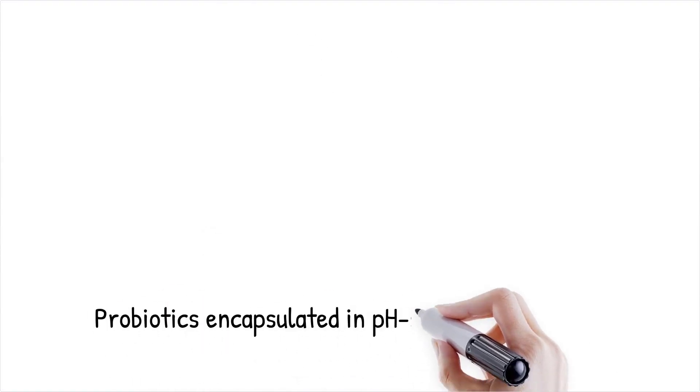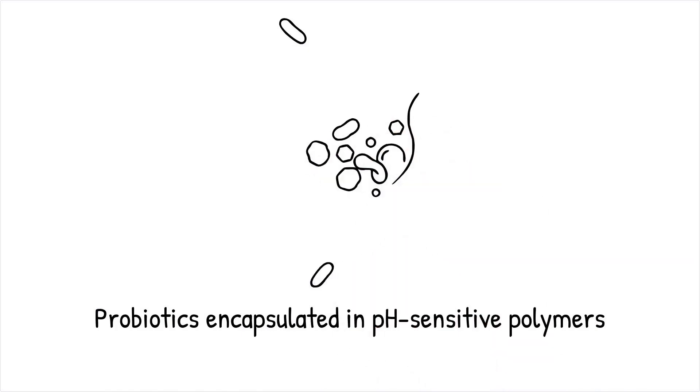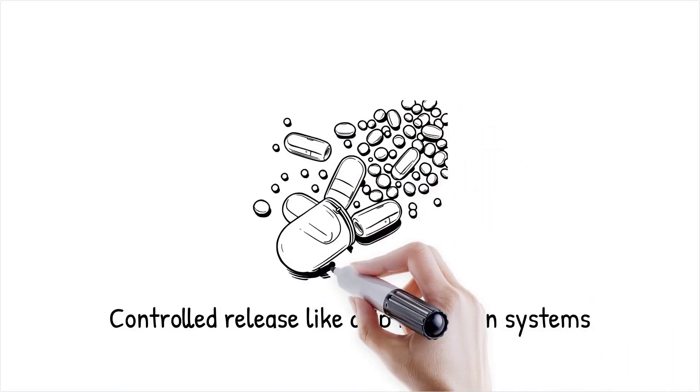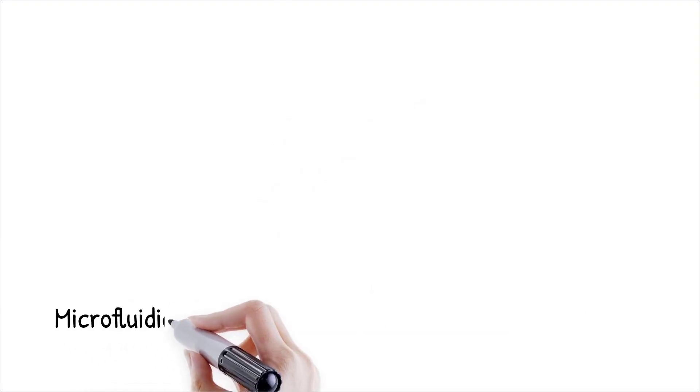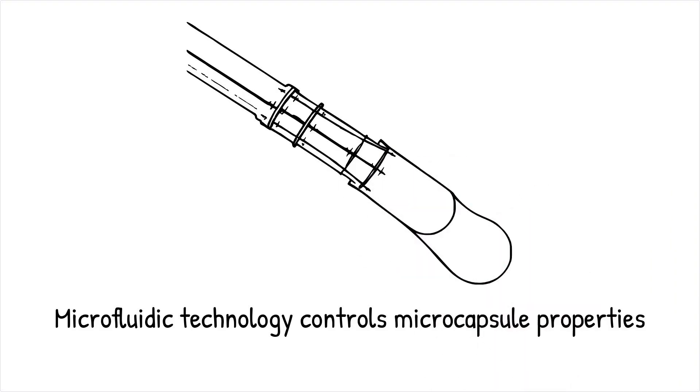Probiotics encapsulated in pH-sensitive polymers stay intact in the stomach, but release in the intestines, maximizing survival. Similar to a drip irrigation system, controlled release delivers nutrients exactly where and when needed.